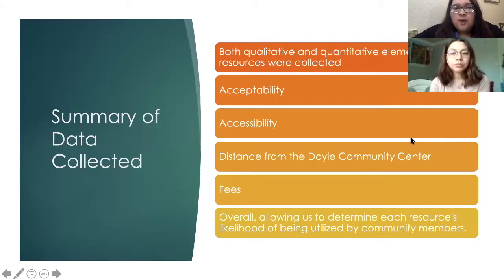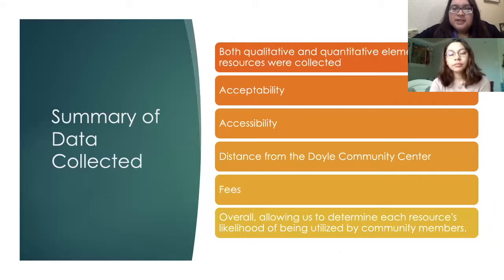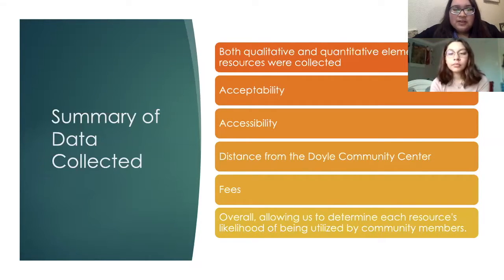Both qualitative and quantitative elements of resources were collected, such as access, acceptability, accessibility, distance from the Doyle Community Center, and any fees associated with the healthcare resources — overall allowing us to determine each resource's likelihood of being utilized by community members.